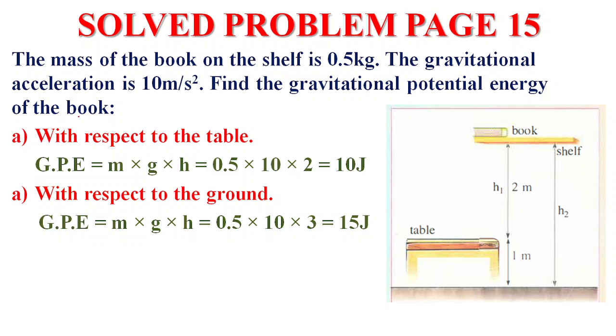Find the gravitational potential energy of the book with respect to ground. We take the height of the book with respect to the ground, which is H2, 3 meters. We write the rule, GPE equals mass times gravity times height. Mass 0.5 times G 10 times H 3 meters. We get 15 joules.